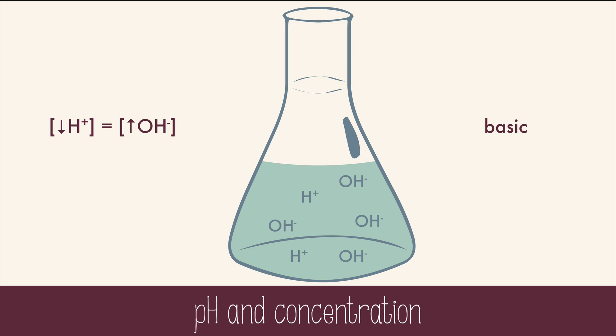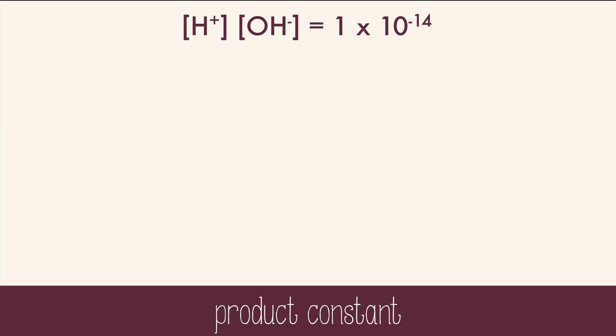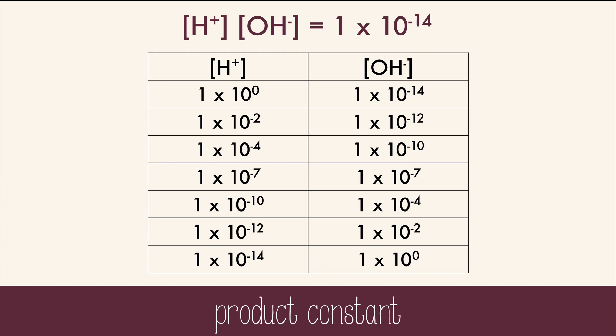Basic solutions are also sometimes known as alkaline solutions. Since the concentration of hydrogen and hydroxide ions is inverse, we can calculate their constant, which is always 1×10⁻¹⁴. Take a look at this table — as the concentration of hydrogen ion decreases, the hydroxide increases, but their product is always 1×10⁻¹⁴.